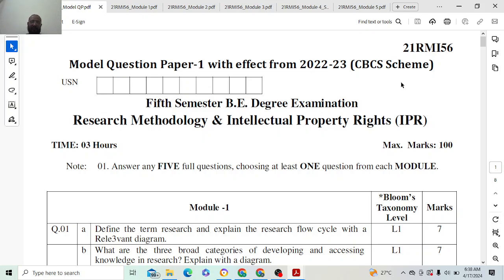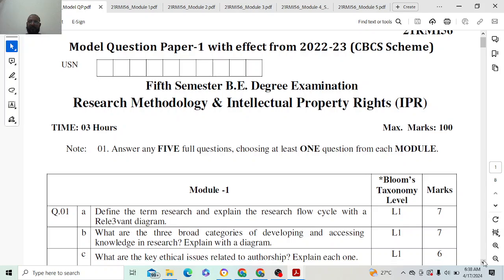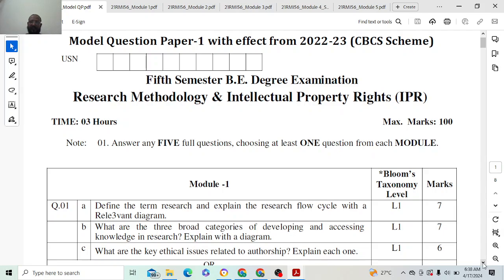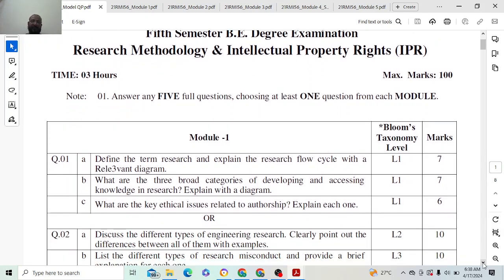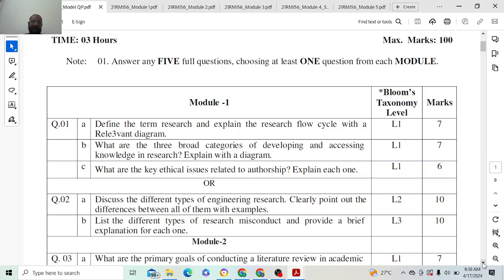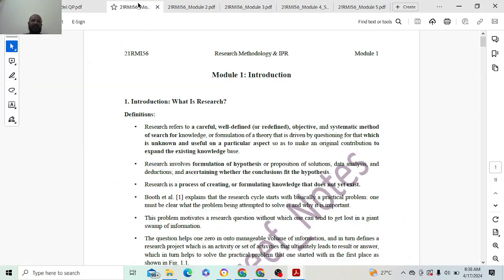So let's see, with respect to the notes, I just saw the model question papers. So this is the first model question paper. And remember, your subject is 21RMI56, and the subject name is Research Methodology and Intellectual Property Rights (IPR). And definitely you will be knowing the time for your exam is three hours and the maximum marks is 100 marks. So we will start with model one.